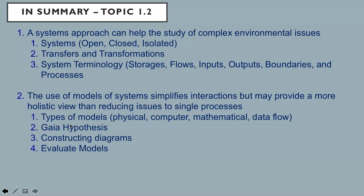So here is a brief summary of everything covered in this movie. A systems approach can help the study of complex environmental issues. Systems are open, closed, and isolated. You should be able to understand the difference between transfers and transformations and recognize them in systems. Make sure you know the system terminology of storage, flows, inputs, outputs, boundaries, and processes. Understand that the use of models of systems simplifies interactions, but may provide a more holistic view than reducing issues to single processes. There are many types of models, physical, computer, mathematical, data flow. There is the Gaia hypothesis. Understand how to construct system diagrams from given data and be able to evaluate models.